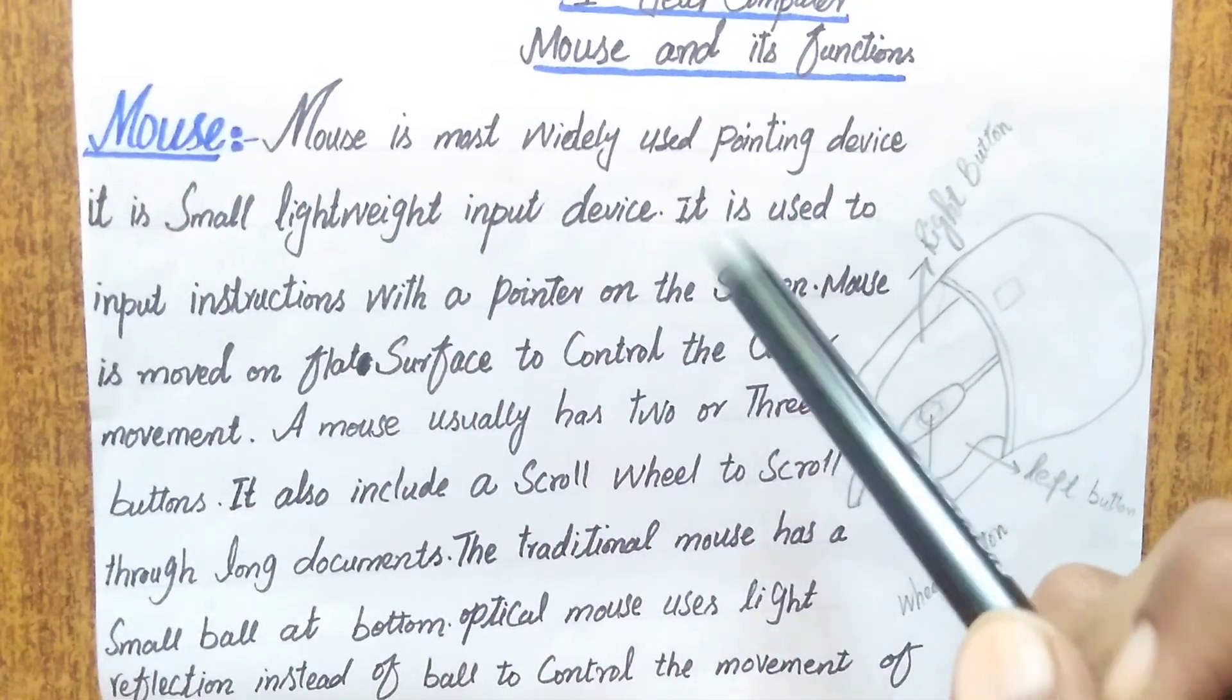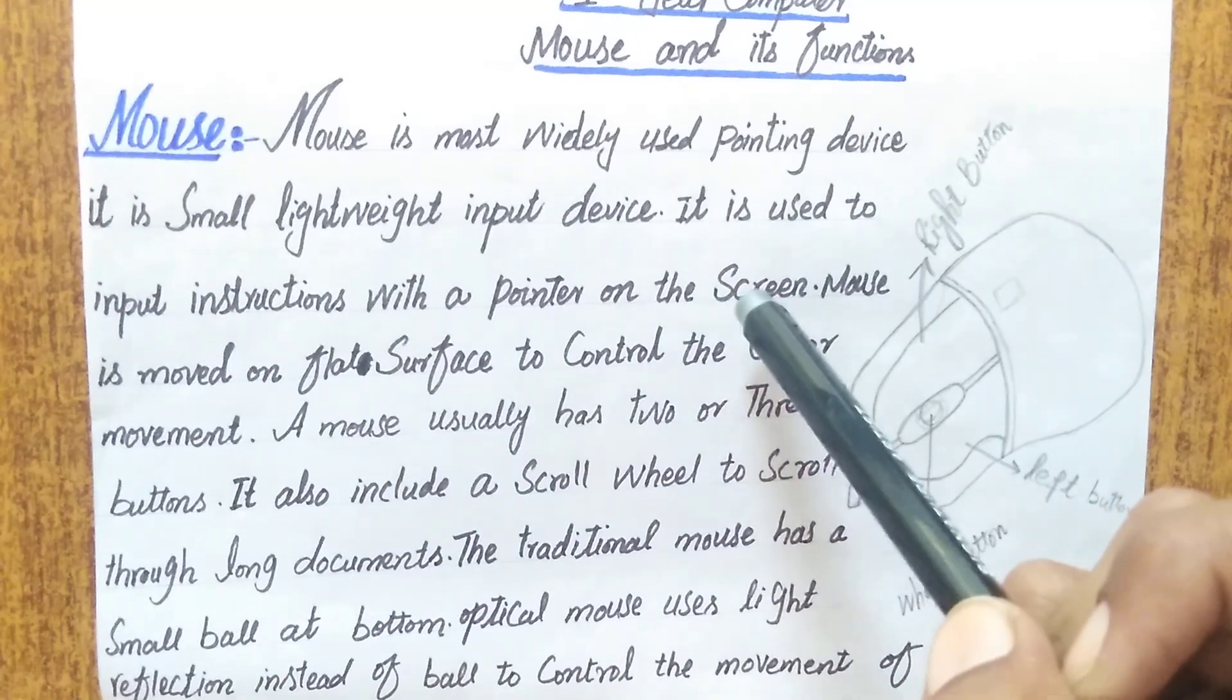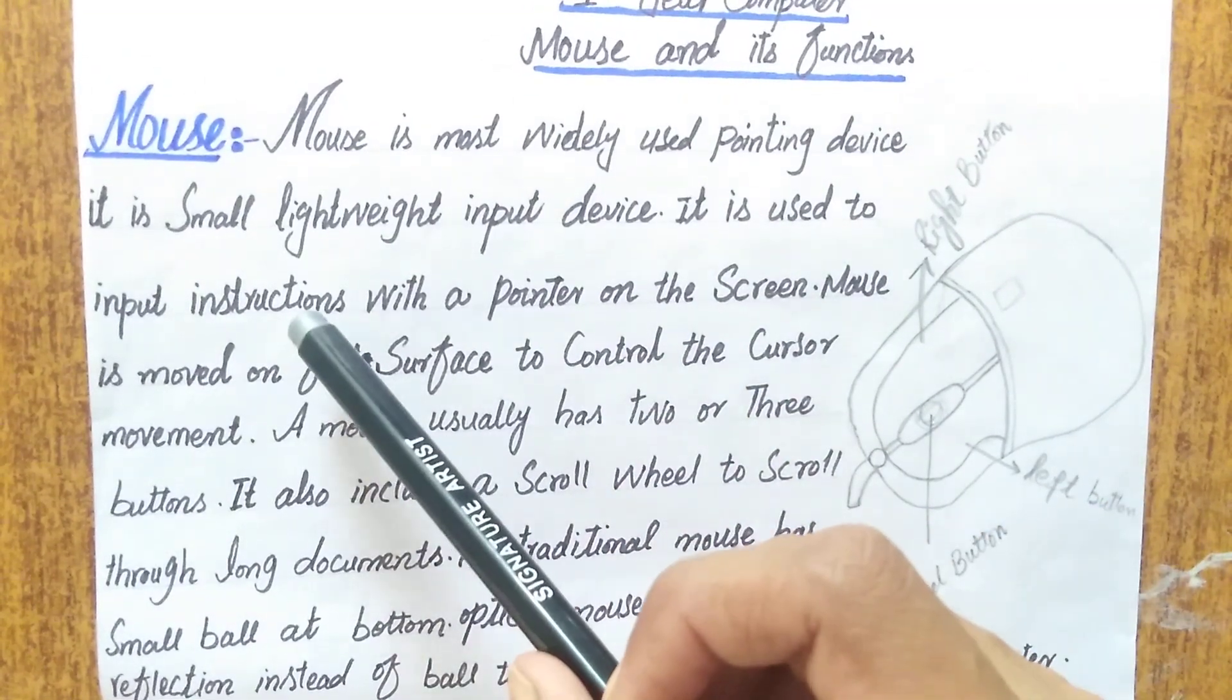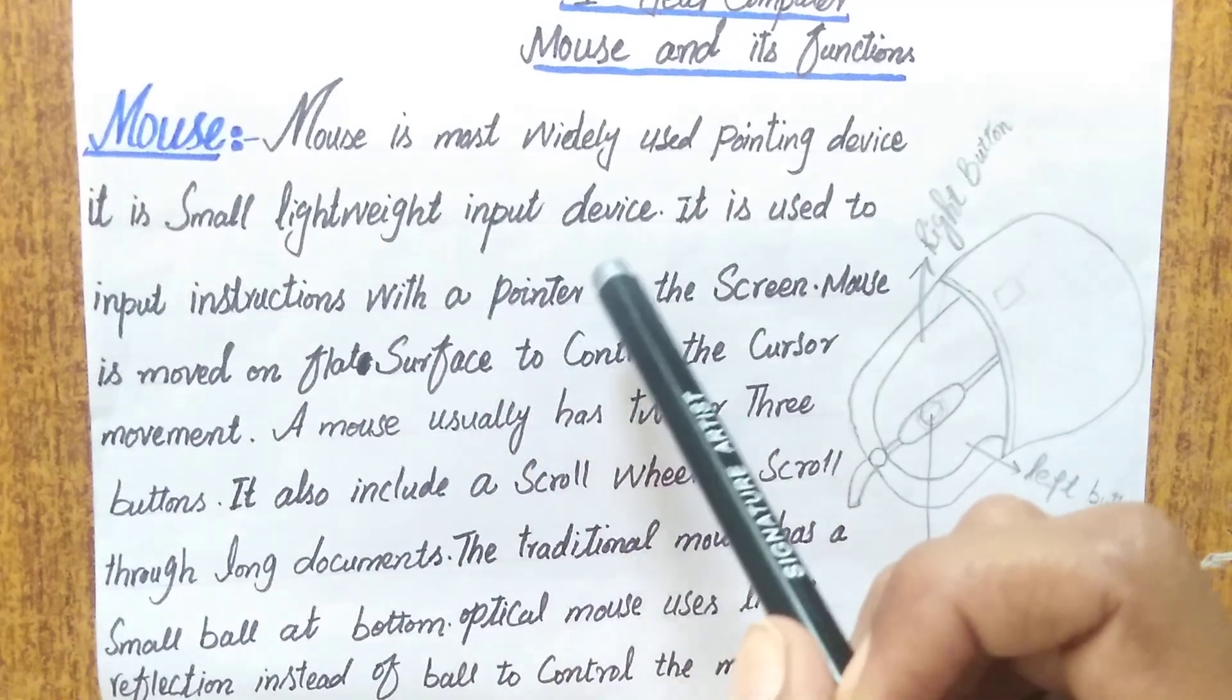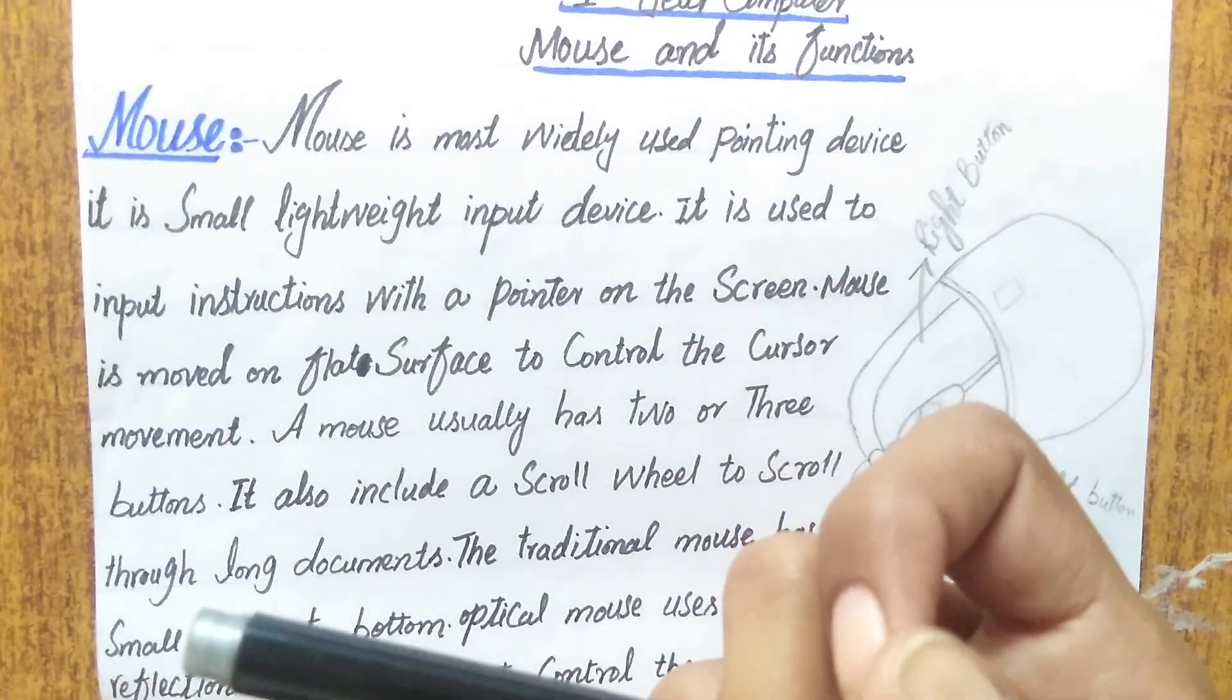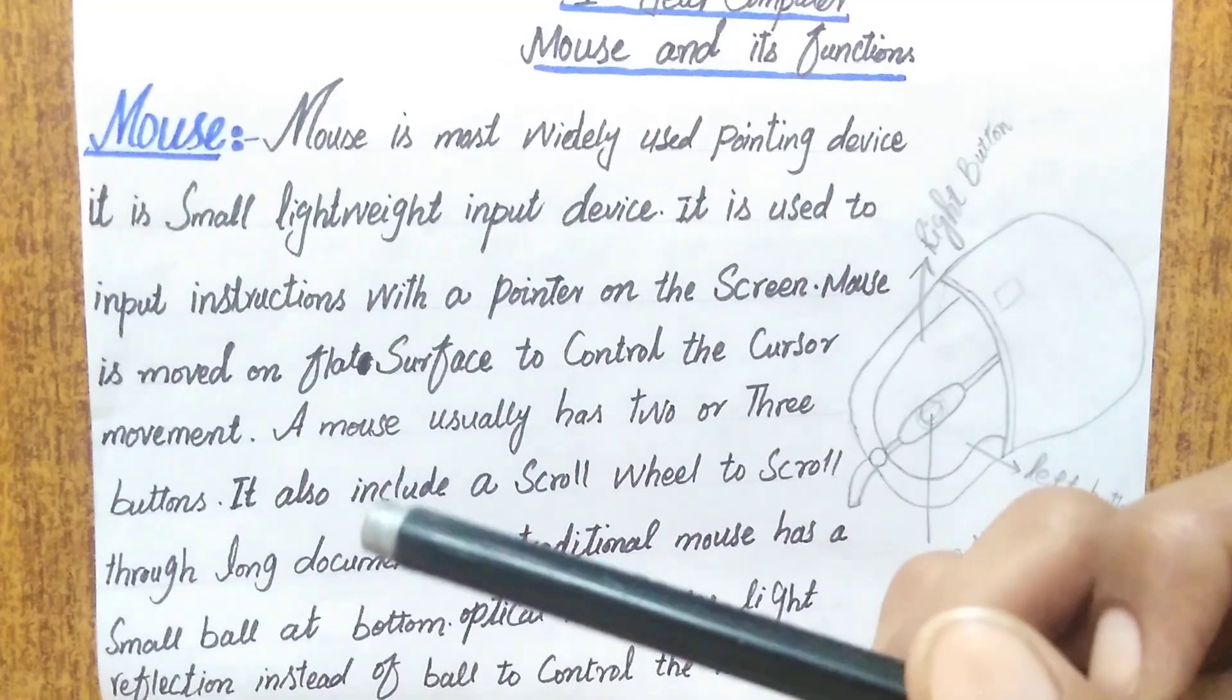This is your computer screen with a pointer on it. What is the pointer? Basically it is a symbol that you see on the screen which is used to give instructions.